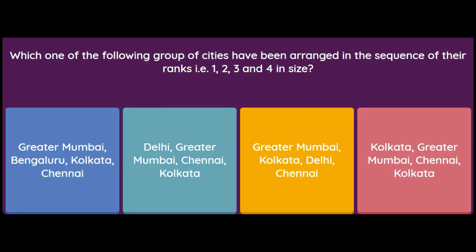Which group of cities is arranged in sequence of ranks 1, 2, 3, and 4 by size? The answer is Greater Mumbai, Kolkata, Delhi, and Chennai. You can remember this as G-K-D-C: G for Greater Mumbai, K for Kolkata, D for Delhi, and C for Chennai.